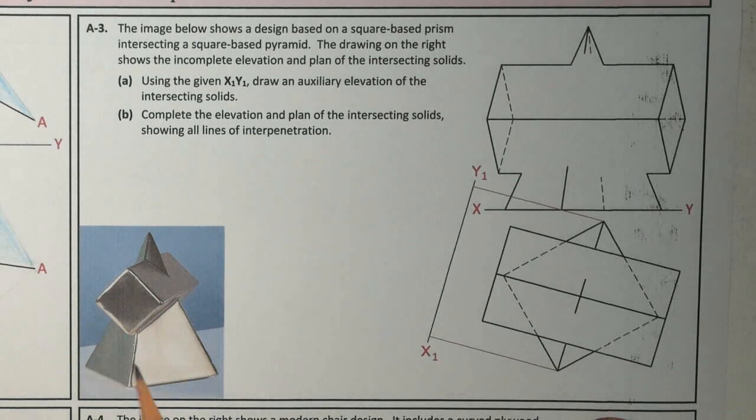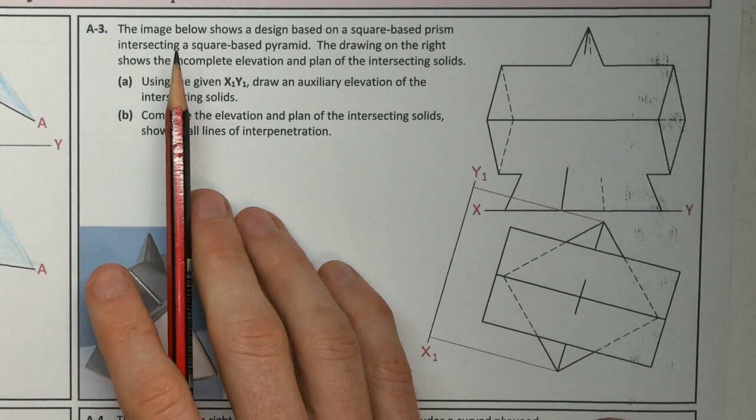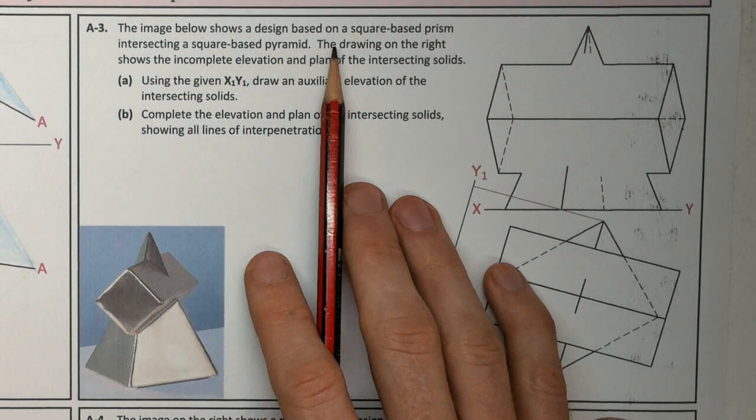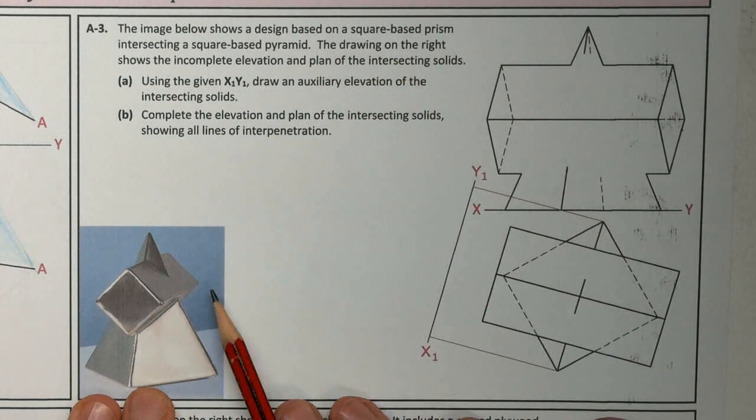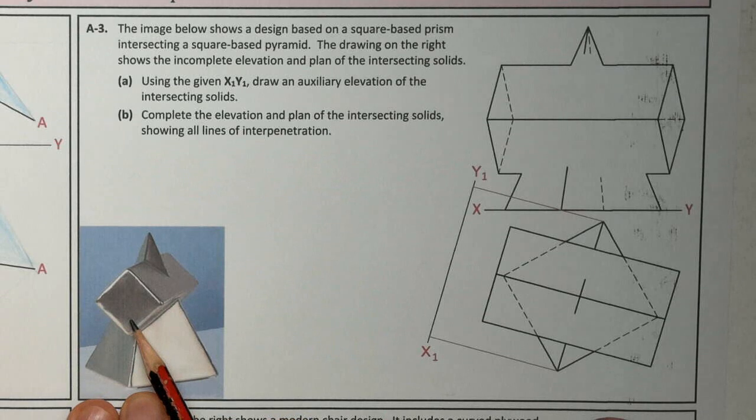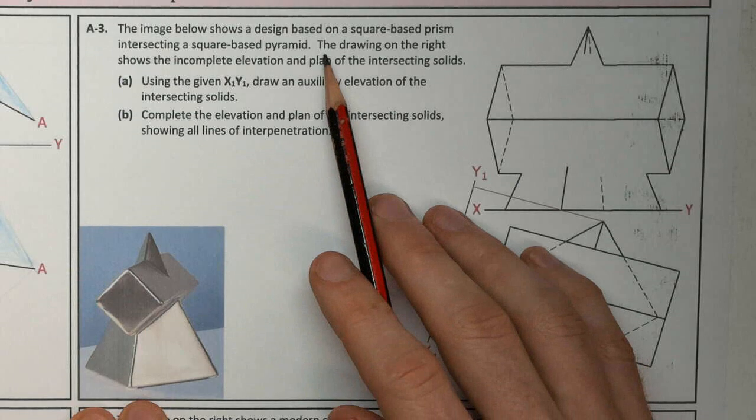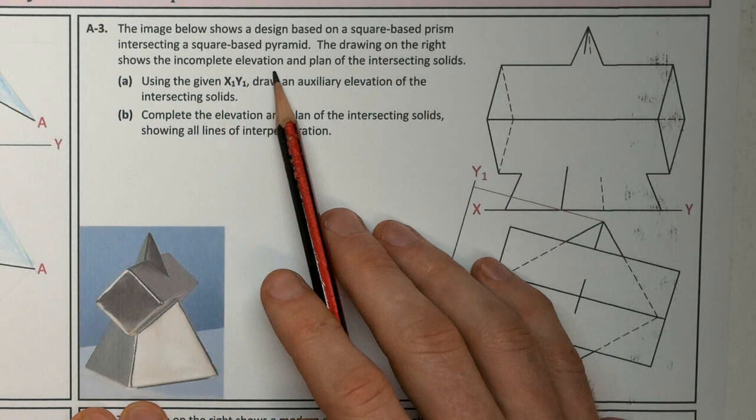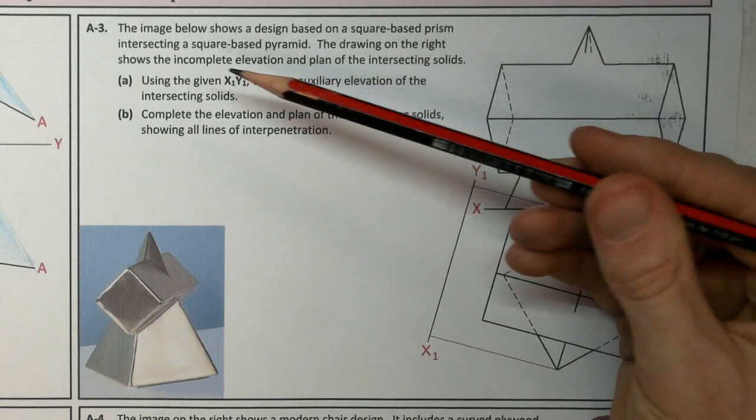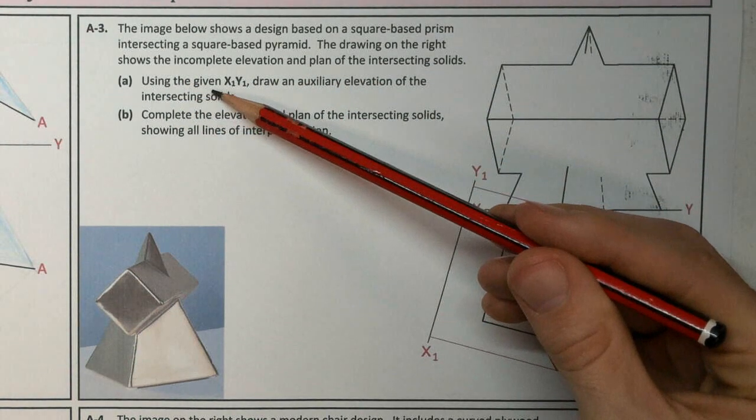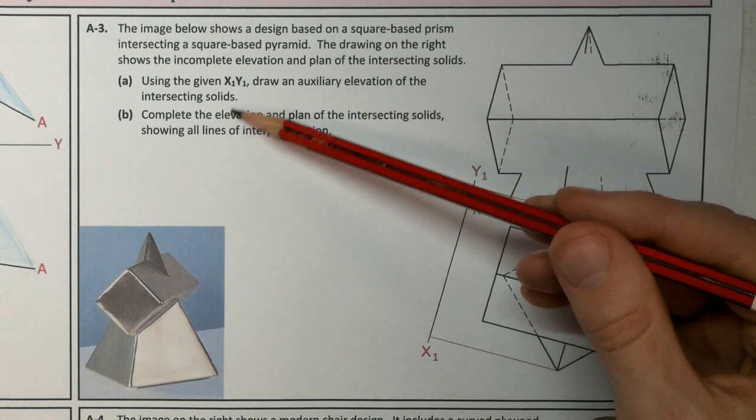Welcome to 2022 question A3. This was an intersecting solids question. The image below shows a design based on a square-based prism intersecting a square-based pyramid. The drawing on the right shows the incomplete elevation plan for the intersecting solids. Part A: using the given X1, Y1, draw an auxiliary elevation of the intersecting solids.